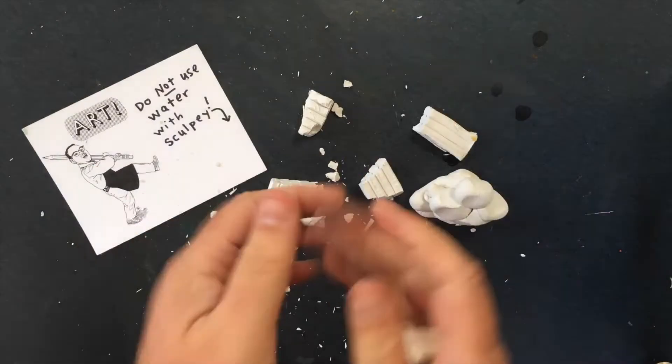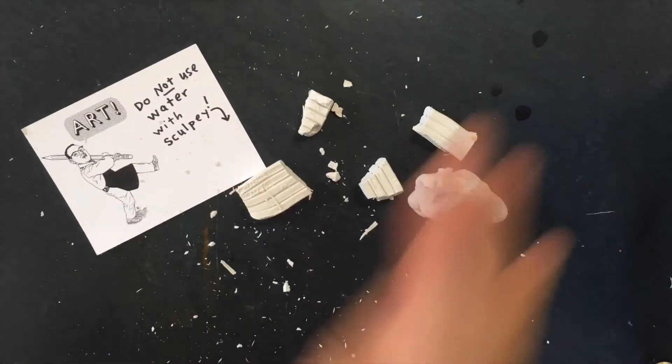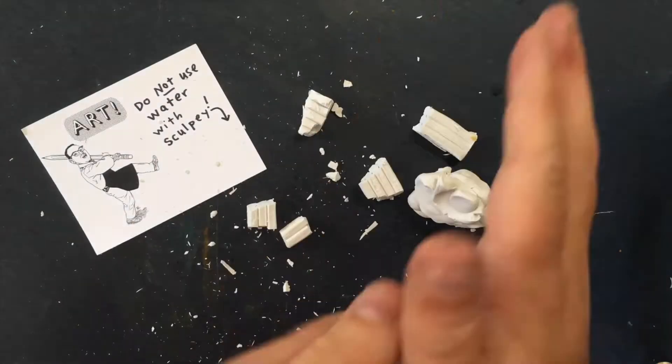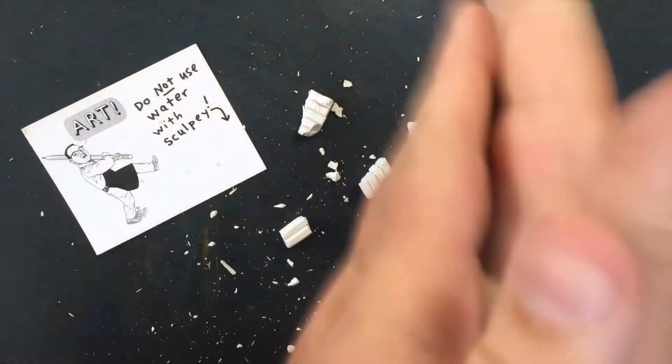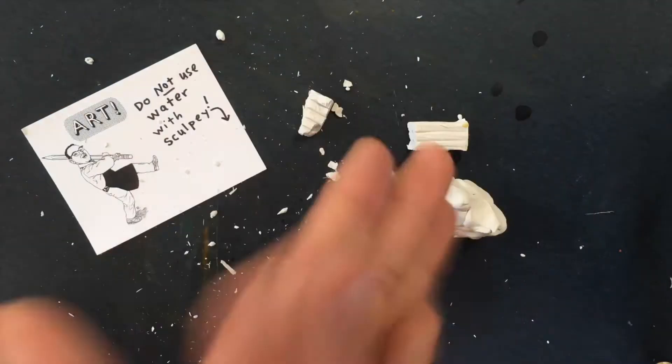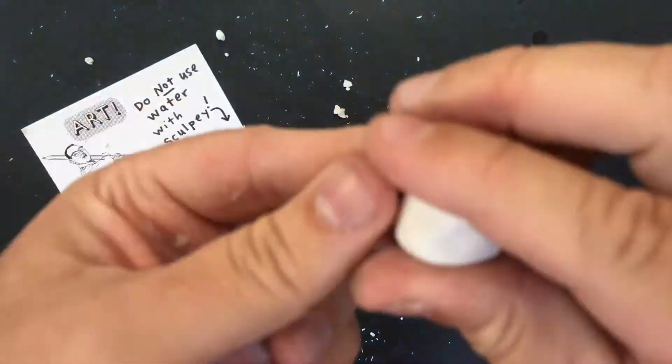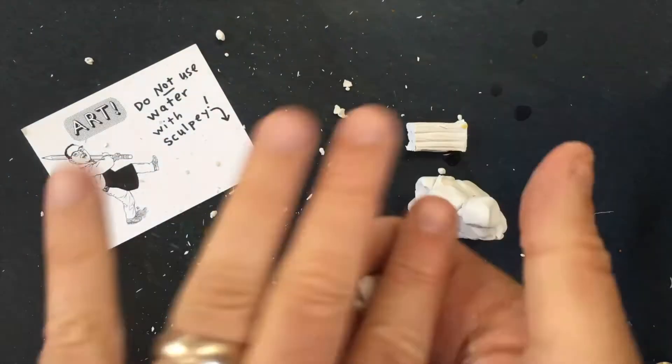Instead, you soften this clay by rolling it in your hands and the heat from your hands will make it soft. You do that by breaking the big brick of clay into small pieces and then rolling those pieces between your hands until they get soft. They should feel like a marshmallow when they're soft.